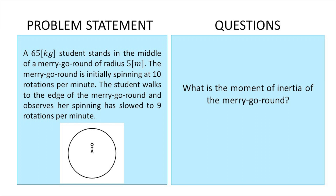Let's go ahead and read this problem together. Make sure that you write everything down so that you can follow along. A 65-kilogram student stands in the middle of a merry-go-round of radius 5 meters. The merry-go-round is initially spinning at 10 rotations per minute. The student then walks to the edge and the spinning slows to 9 rotations per minute. Question: what is the moment of inertia of the merry-go-round?